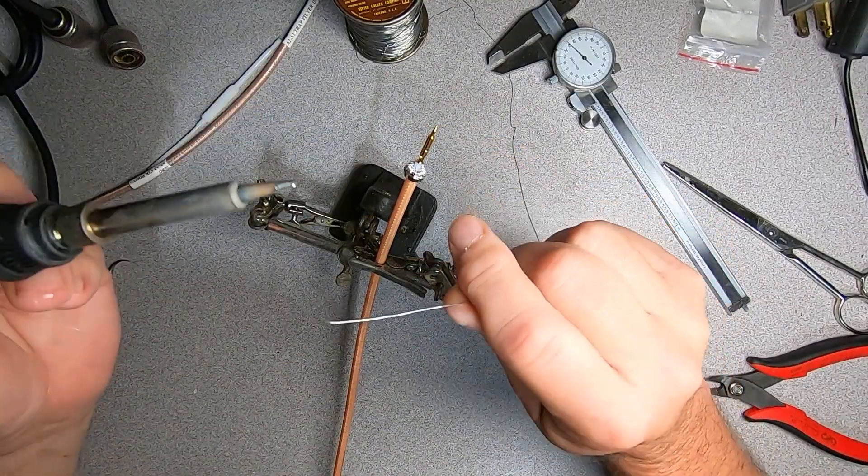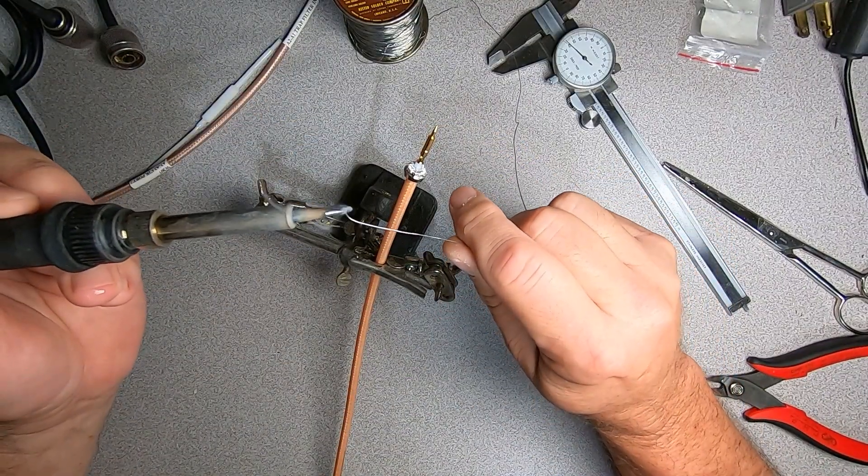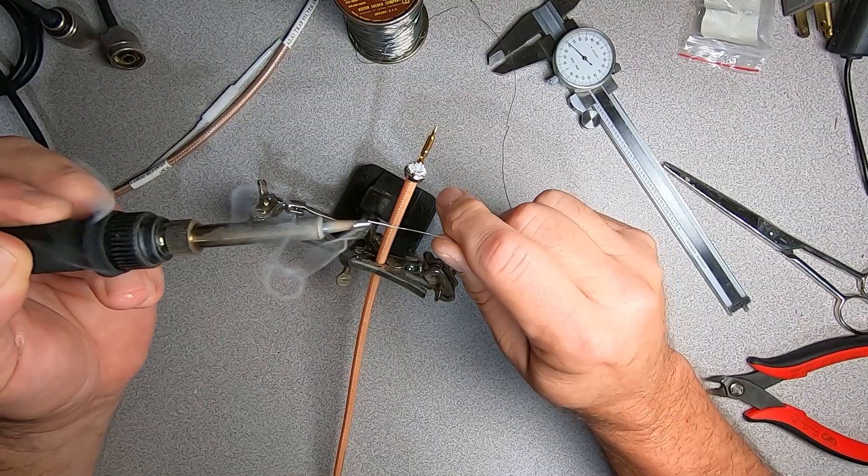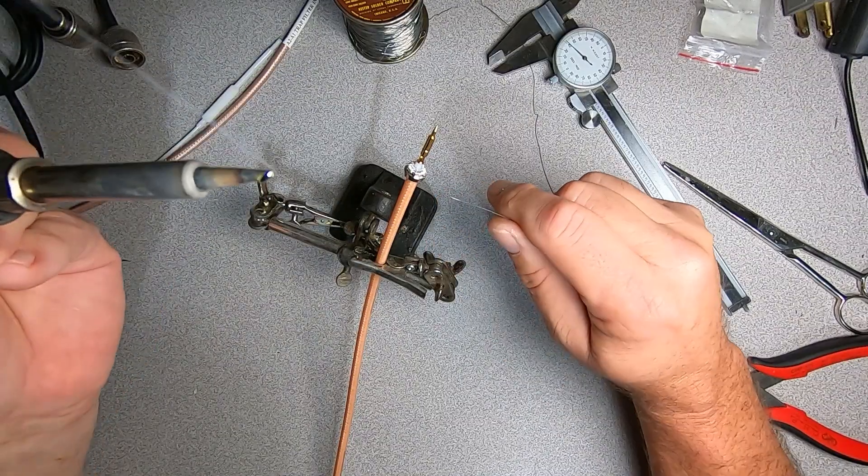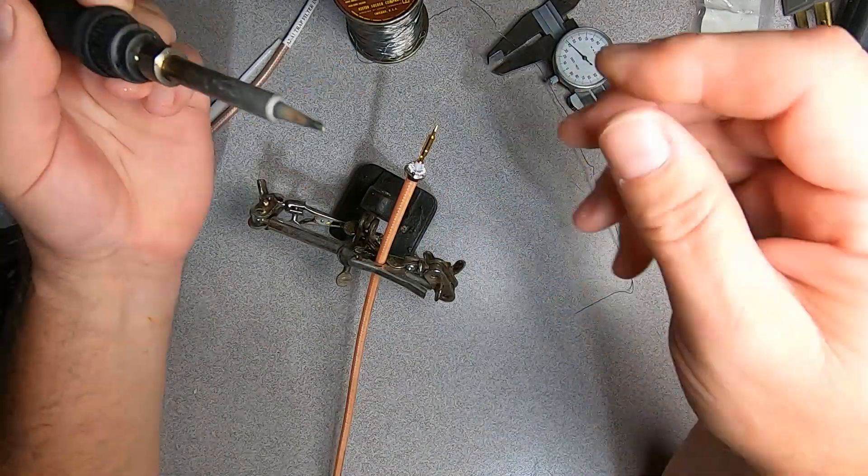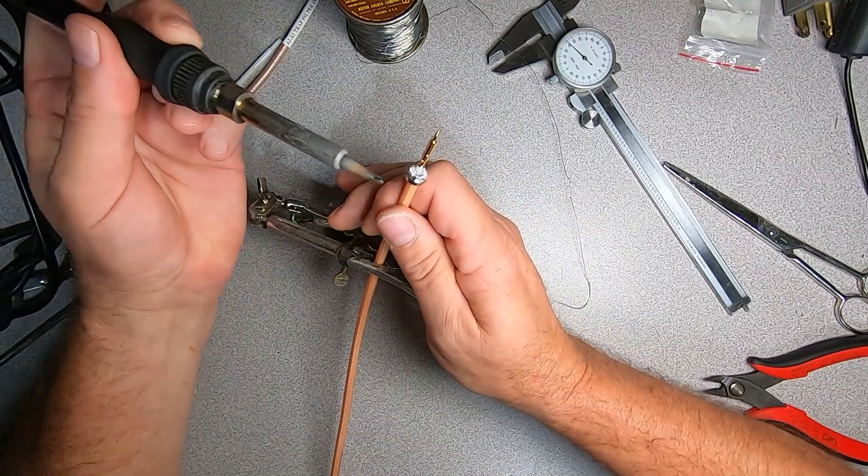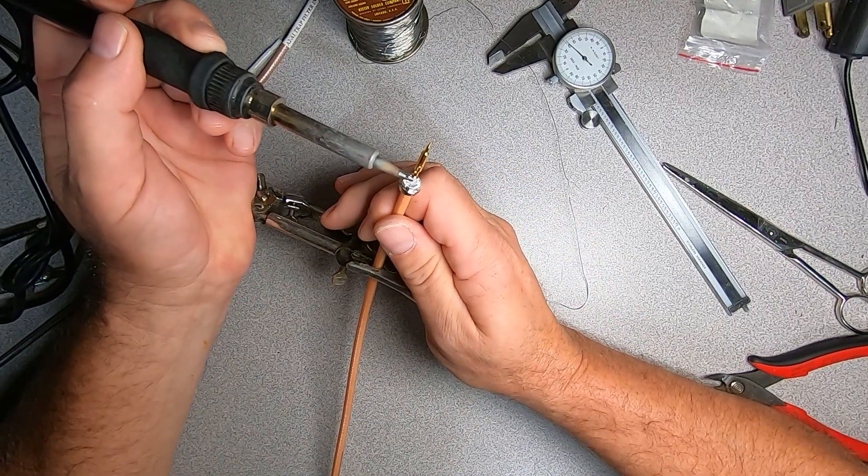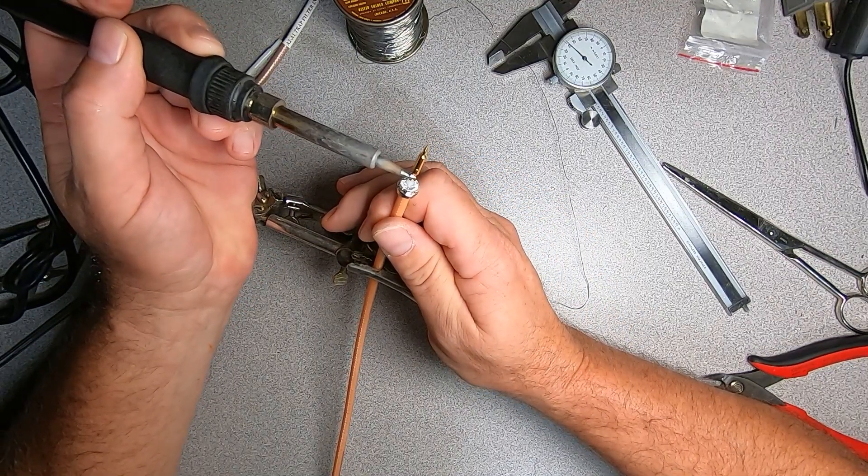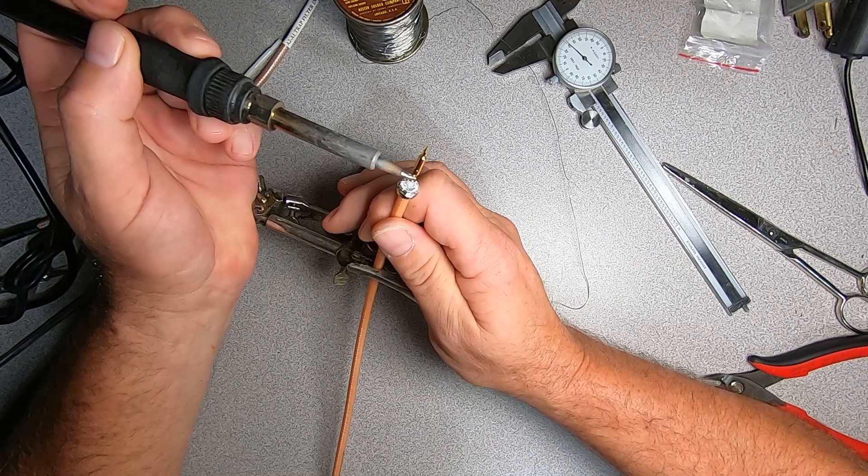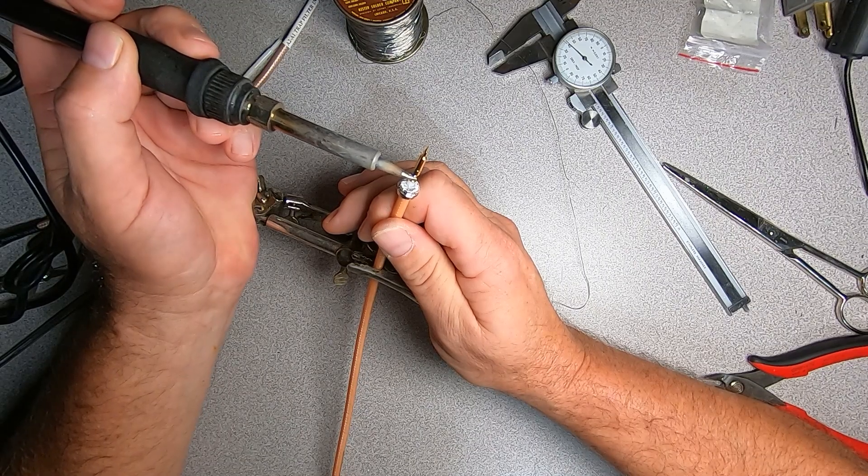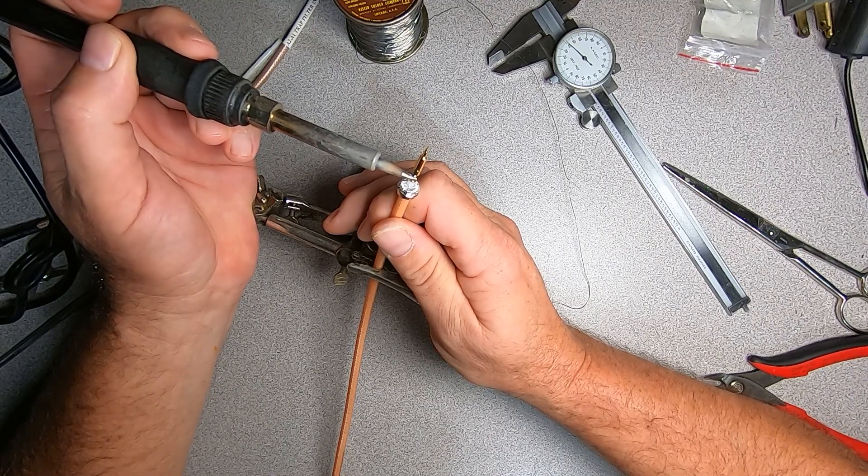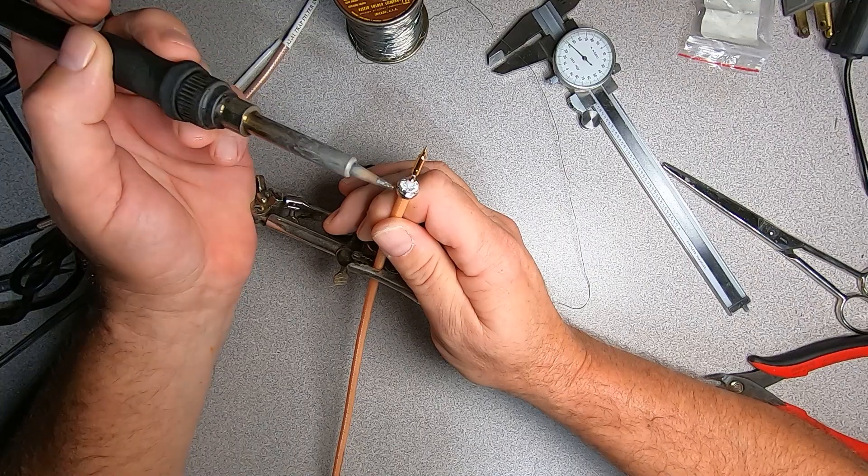Now when we flow solder in this connection, what I do is tin my iron until I have a nice little blob. Go over our solder hole and the solder should wick inside, just like that.